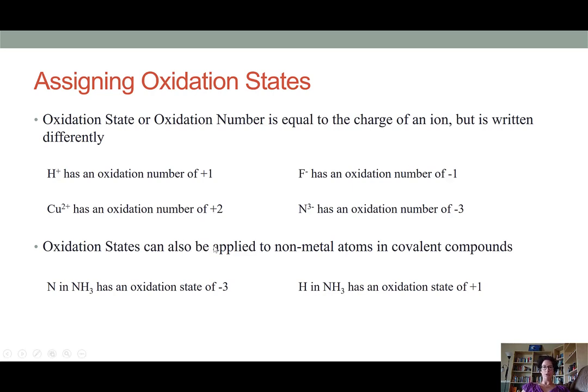Now oxidation states can also be applied to nonmetal atoms when they're in covalent compounds. This is a little less straightforward. Below I show how the nitrogen and hydrogen within a molecule of ammonia actually can be assigned oxidation states. In ammonia, NH3, the nitrogen has an oxidation state of negative 3, while the hydrogen has an oxidation of plus 1.